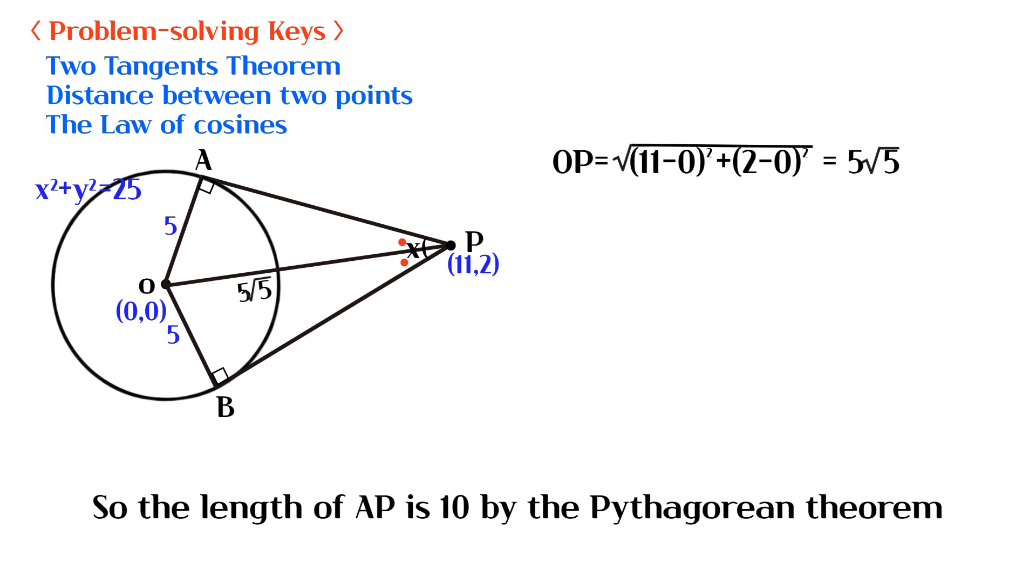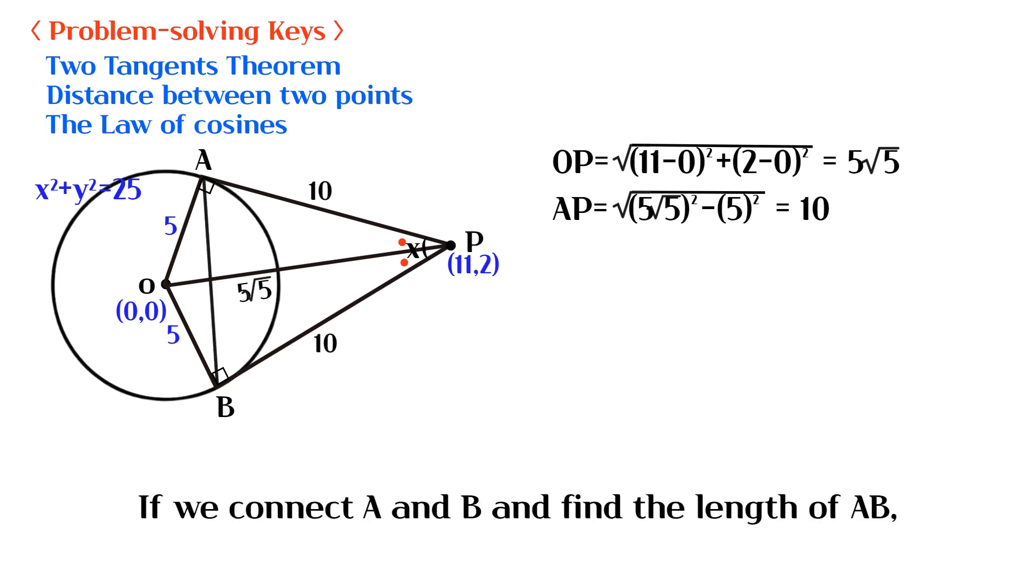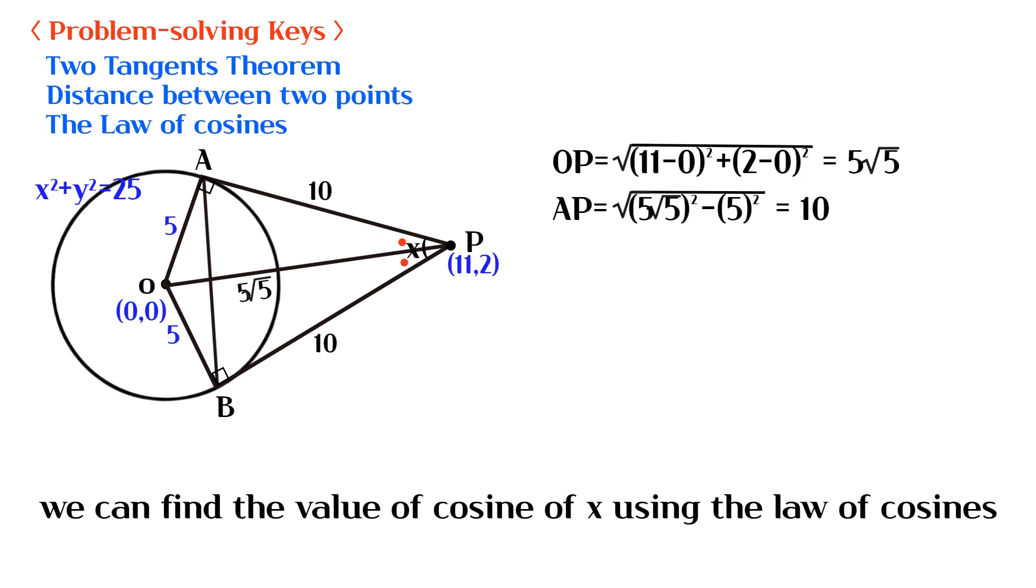So the length of AP is 10 by the Pythagorean theorem. If we connect A and B and find the length of AB, we can find the value of cosine of X using the law of cosines.